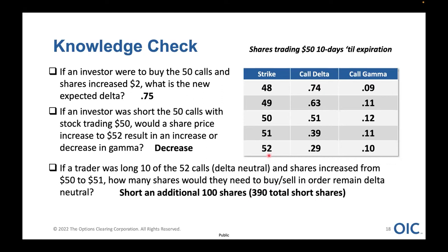So now I'd be long 10 of these 52-level calls with the stock trading 51, and short 390 shares of stock — delta-neutral but long gamma, meaning I want the stock to make a big move up or down to profit on this position. I'm not advocating that you trade from a delta-neutral perspective; it's usually reserved for professional traders trying to capture a bid-ask spread and trade for edge. Most retail investors really don't trade from a delta-neutral perspective.